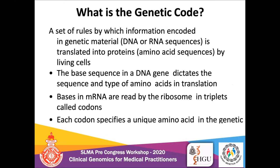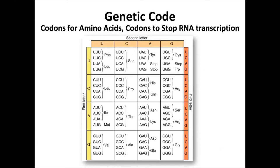The genetic code is the set of rules by which information encoded in the genetic material is translated into amino acid sequences. Genes that code for proteins are composed of trinucleotide units called codons, each coding for a single amino acid. The genetic code consists of a sequence of bases that make up 64 possible codons, three of which do not code for amino acids but indicate the end of a protein. The remaining 61 codons specify 20 amino acids that make up proteins.